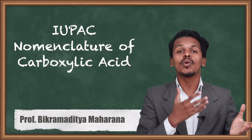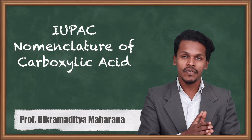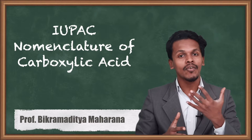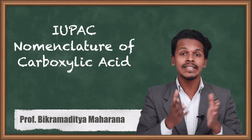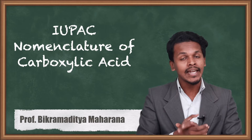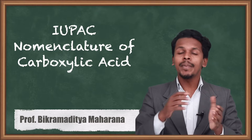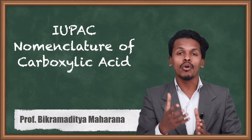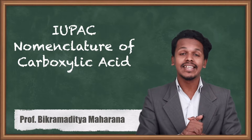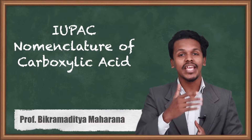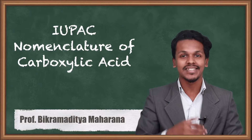In the previous lecture we understood what carboxylic acid is. We covered its definition and classification into aliphatic and aromatic carboxylic acid. Now we are going to talk about the nomenclature of carboxylic acid and understand how we can give names to carboxylic acids.